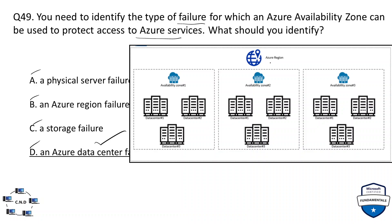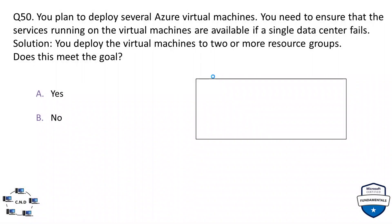Here is an overview of availability zones and regions in Azure. At the largest scale you have regions, and inside an Azure region you have multiple availability zones — typically zones 1, 2, and 3. Inside each availability zone there are one or more data centers. If one data center fails and your application is replicated across multiple data centers, users won't experience any downtime — the application remains available from the other data centers.